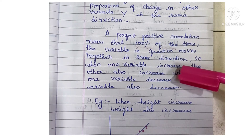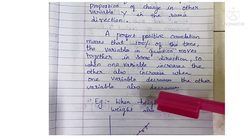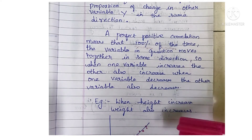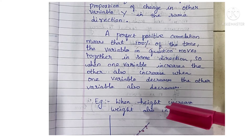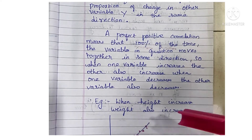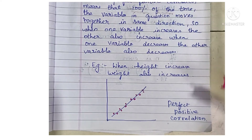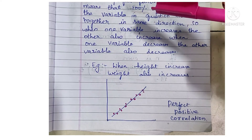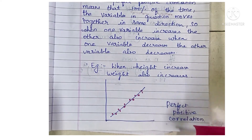When one variable increases, the other variable also increases. When one variable decreases, the other variable also decreases. For example, when height increases, weight also increases — height is one variable and weight is the other. This is the diagram for perfect positive correlation. You can give any one definition along with an example and this diagram.